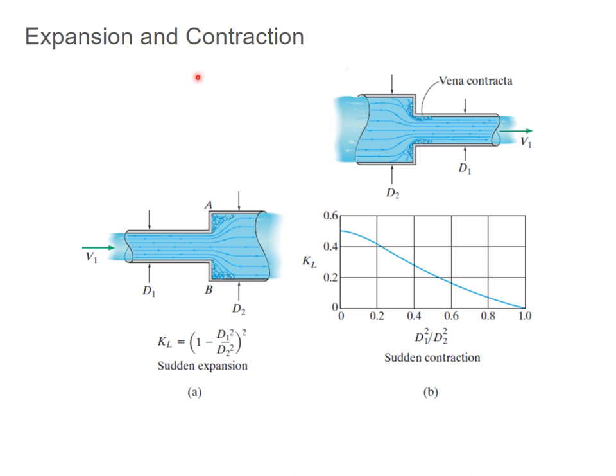The same is true for expansions and contractions. If you go from a smaller to a bigger pipe, you have a value for K sub L. If you go from a bigger pipe to a smaller pipe, you have a graph or chart you can look at. Given the ratios D1 to D2, you can look up and find the K sub L value.